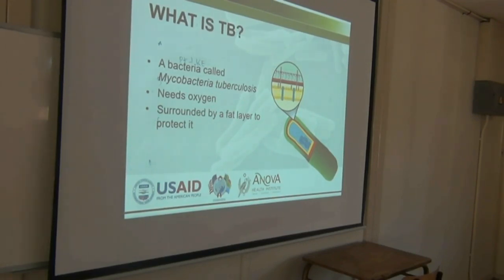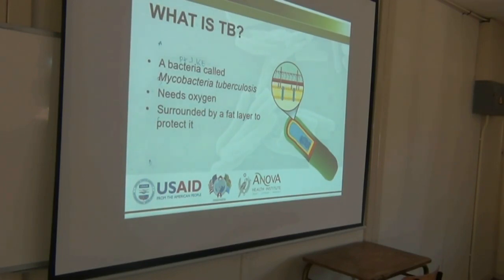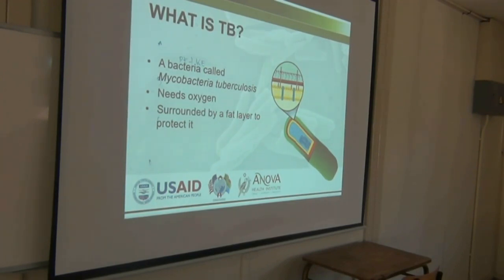Mycobacterium tuberculosis is the bacteria that causes TB. It is a special kind of bacteria — not your normal gram positive and gram negative. It is a mycobacteria, which means the cell wall looks different from normal gram positive and negative bacteria. It is also very resistant and can lie dormant for a long time before it reactivates. TB needs oxygen to survive — it's an aerobic bacteria — which is why it likes to infect the lungs.